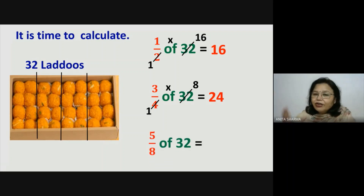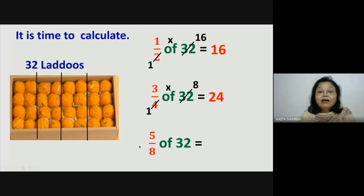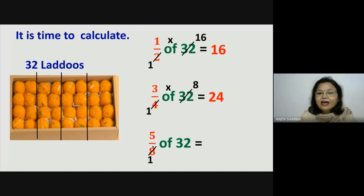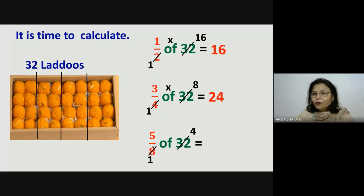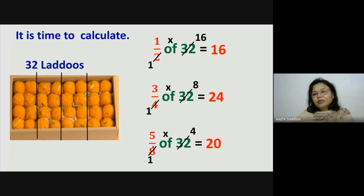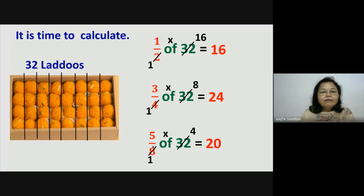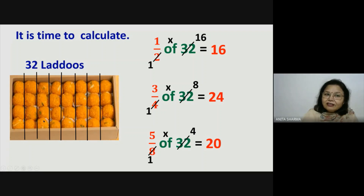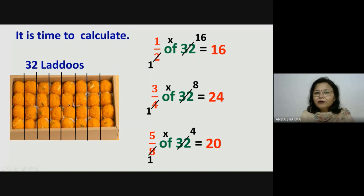Now distribute 5 eighth of these laddus among your friends. Our understanding — picture is going on side by side — we have to divide these 32 laddus into 8 parts. So 8 ones are 8 and 8 fours are 32, means now we will make groups of 4. Then 5 times 4 is equal to 20. You will distribute 20 laddus among your friends. I have divided these laddus in 8 parts — groups of 4 4 — so in 5 parts there will be 5 fours or 20 laddus. I hope you understood very well.